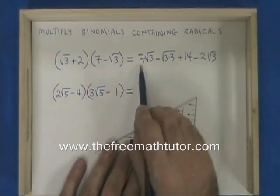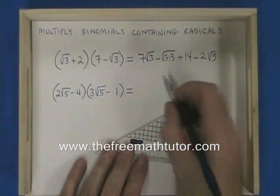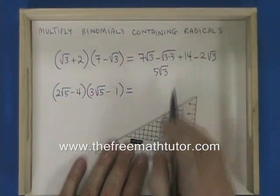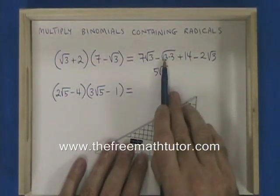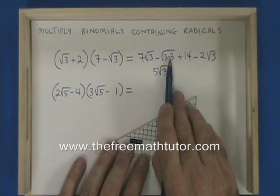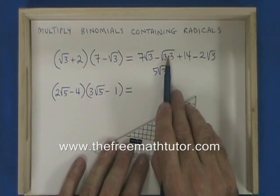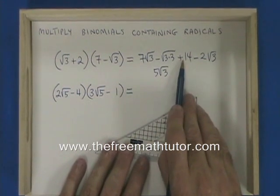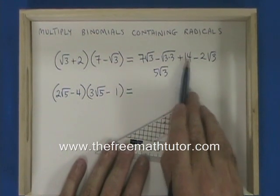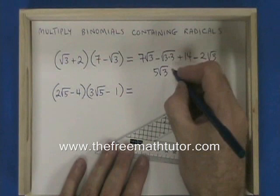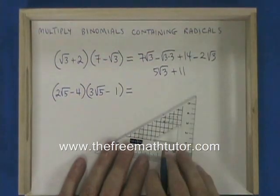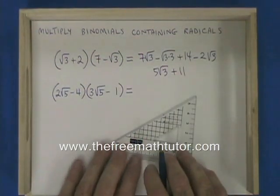7 root 3 minus 2 root 3 gives me 5 root 3. The square root of 3 times 3 is the square root of 9, which is 3. So I have negative 3 plus 14, which equals 11. My final answer is 5 root 3 plus 11.